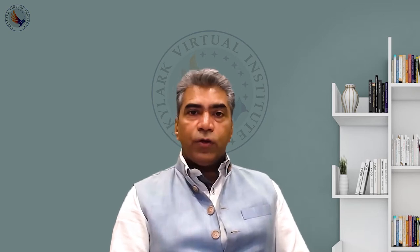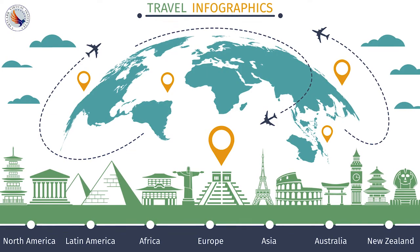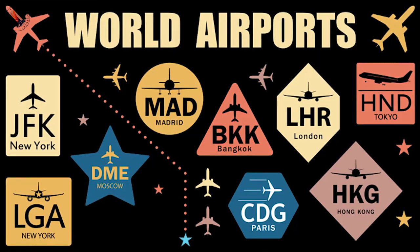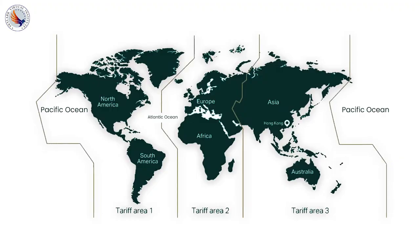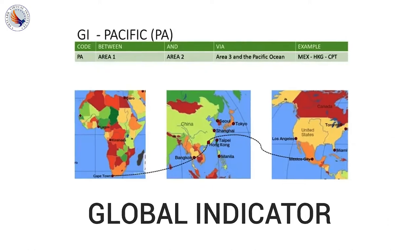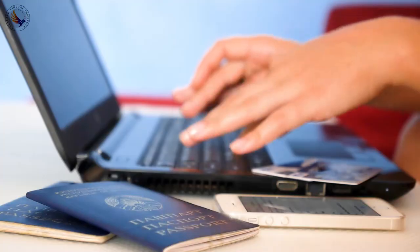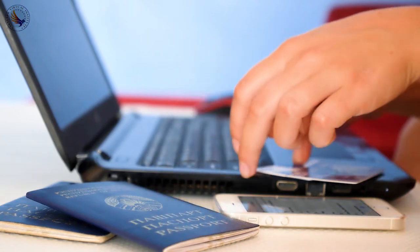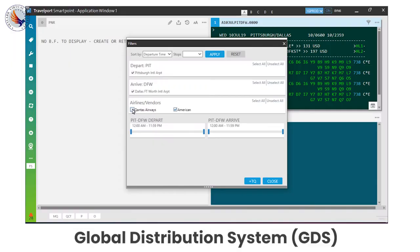This course includes everything that you need to learn about air fares and ticketing management. You will learn about the geography, airport codes, city codes, the areas TC1, TC2, TC3, global indicators, different kinds of fares, how to issue tickets, how to create PNRs on the system, what is the GDS — the global distribution system — where you can make bookings anywhere in the world on any airline. Everything about ticketing is included in this course.